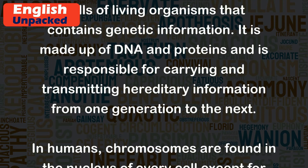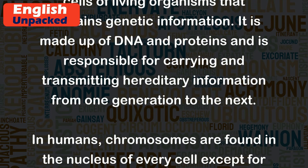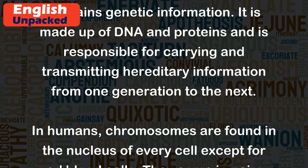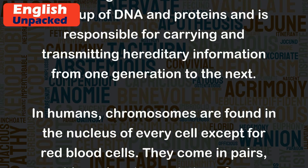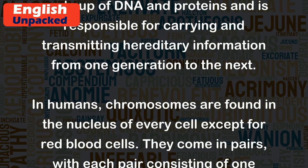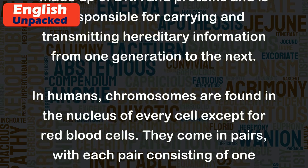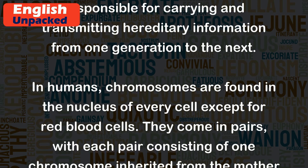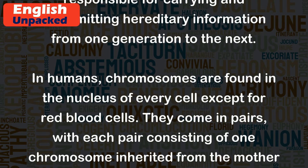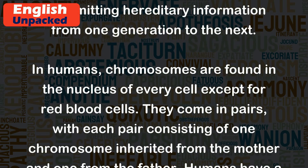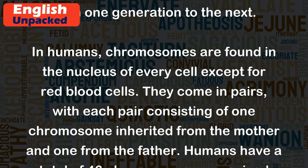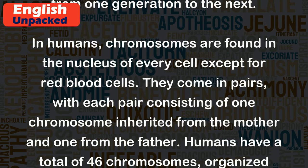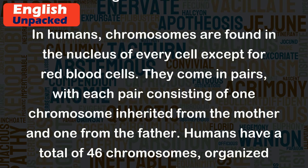In humans, chromosomes are found in the nucleus of every cell except for red blood cells. They come in pairs, with each pair consisting of one chromosome inherited from the mother and one from the father.